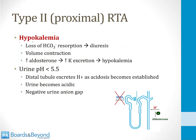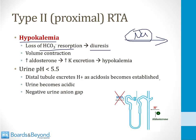Patients with proximal RTAs develop hypokalemia. Any time the proximal tubule loses bicarbonate reabsorption, that leads to diuresis, because the proximal tubule reabsorbs sodium together with bicarbonate. So if it's not reabsorbing bicarbonate, it will also not reabsorb sodium. Sodium will go out in the urine and take water with it, leading to diuresis. Because of the diuresis, there's contraction of the volume, and any time the volume in the body contracts, this activates the renin-angiotensin-aldosterone system. Increased aldosterone leads to increased potassium excretion, and that leads to hypokalemia.